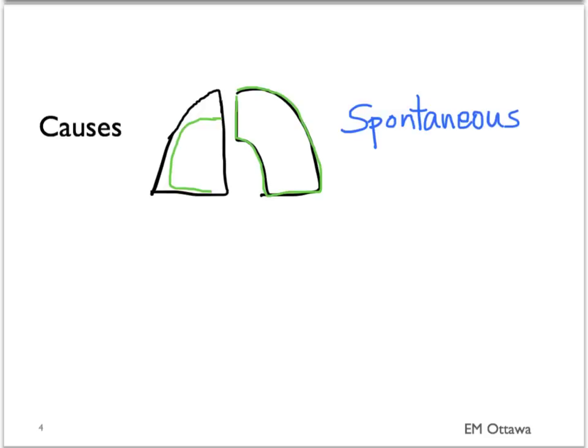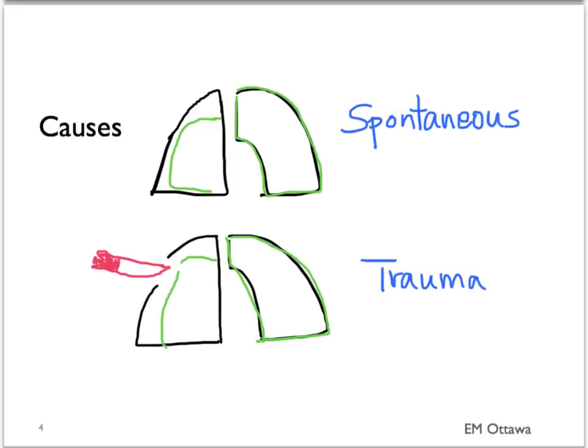How does a pneumothorax occur? It can occur spontaneously or by trauma. We will discuss each of these separately.